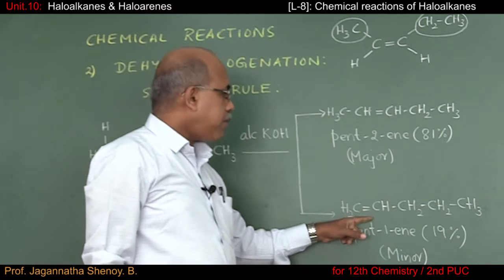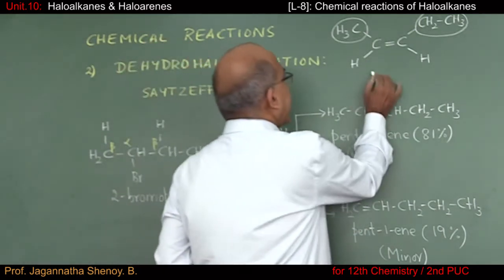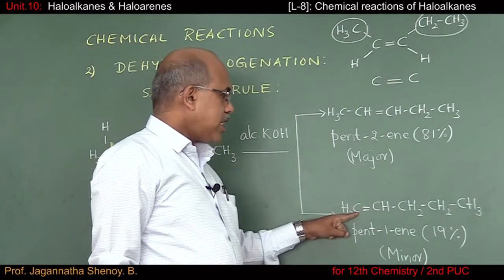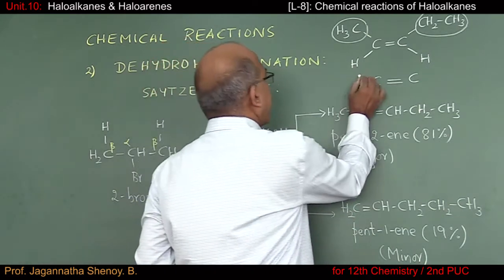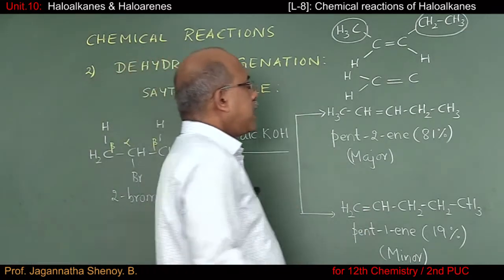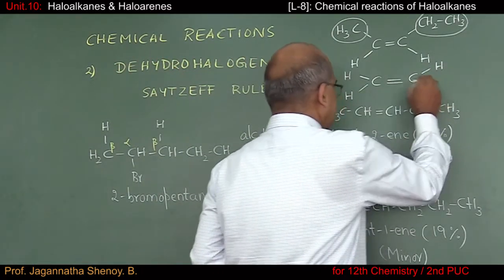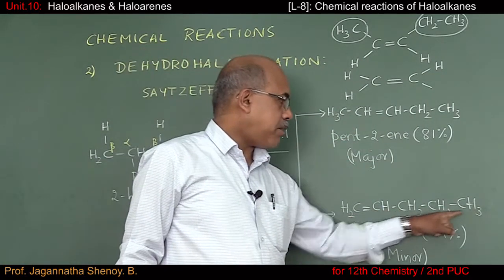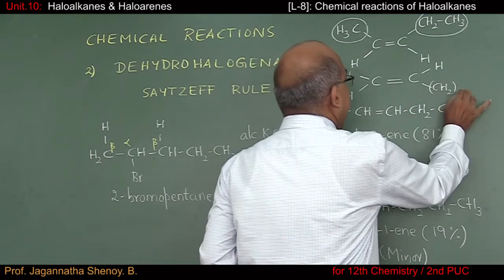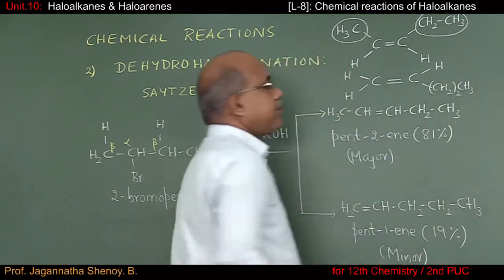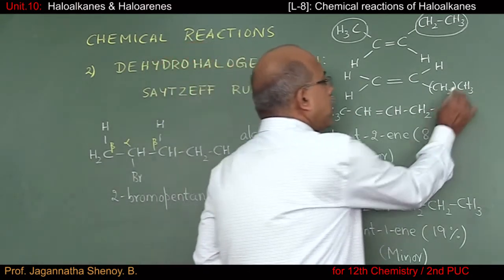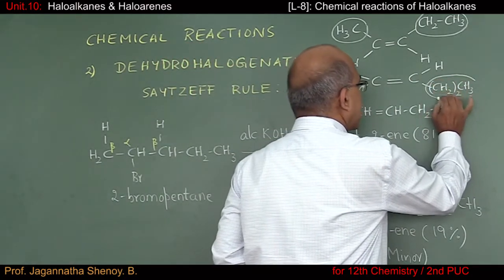So two substitutions have taken place on the two doubly bonded carbon atoms in pent-2-ene. If I consider the structure of pent-1-ene, on the doubly bonded carbon atoms we have two hydrogens on the terminal carbon and an n-propyl group on the other — so only one substitution has taken place. Pent-2-ene is more substituted compared to pent-1-ene.